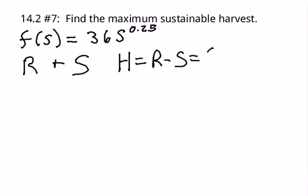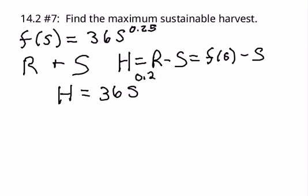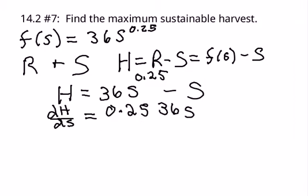Which is f of s minus s. So we're given an f of s, we're trying to find a maximum of this harvest. We need to take the derivative of this particular function, so we're going to do dH/ds with respect to s. When we do the derivative of this, I get 0.25 times 36s to the negative 0.75 minus 1.